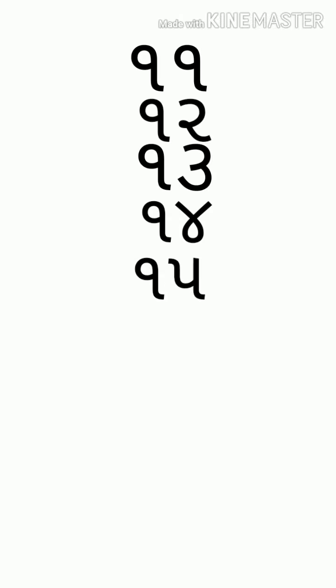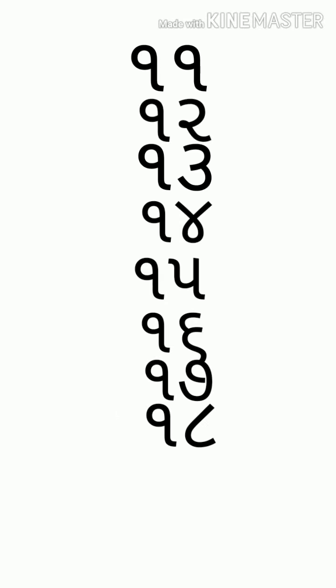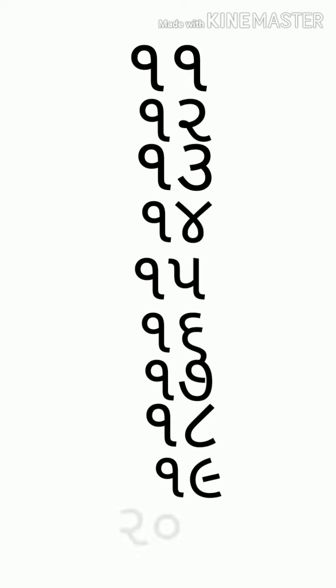પછી આગળ: એકડે અગ્યાર, એકડે બગડે બાર, એકડે તગડે તેર, એકડે ચોગડે ચૌદ, એકડે પાંચડે પંદર, એકડે છગડે સોળ, એકડે સાતડે સત્તર, એકડે આઠડે અઢાર, એકડે નવડે ઓગણીસ, બગડે મીંદી વીસ. હવે બગડે એકડે એકવીસ, બે-બગળા બાવીસ, બગડે તગડે તેવીસ, બગડે ચોગળે ચોવીસ.